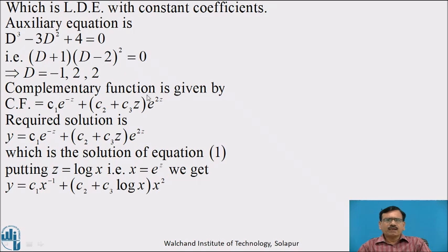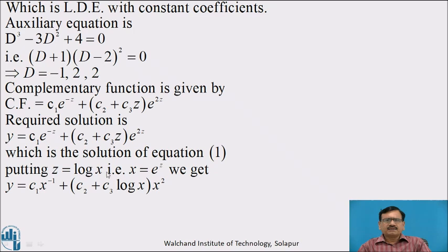Therefore, the complementary function is CF equal to c1 e raised to minus z plus (c2 plus c3 z) e raised to 2z. Since the right-hand side of the equation is 0, the required solution is only CF, that is y equal to c1 e raised to minus z plus (c2 plus c3 z) e raised to 2z. To get the solution of the original equation, put z equal to log x, that is x equal to e raised to z, to get the required solution.